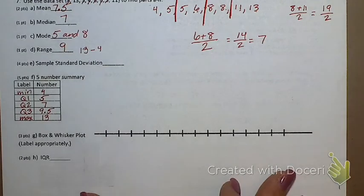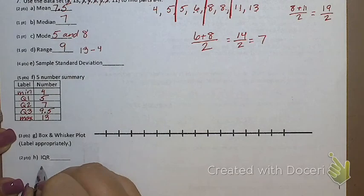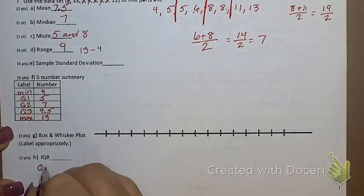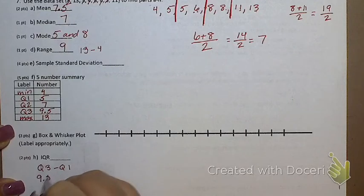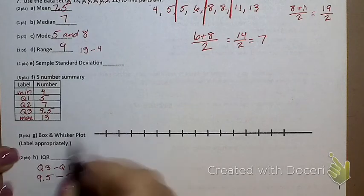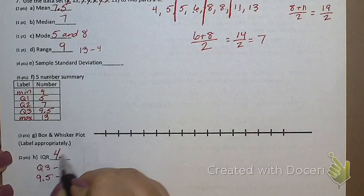I think I'm going to do standard deviation last. What's my IQR? That would be Q3 minus Q1, which is 9.5 minus 5, which leaves me with 4.5.